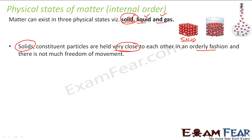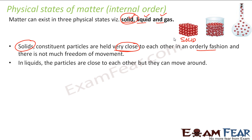In a liquid, the particles are close to each other but they can move around. A particle can move from one place to another because there is space available. So particle movement is allowed, and that's why it's a liquid.